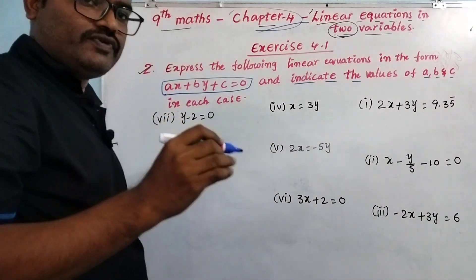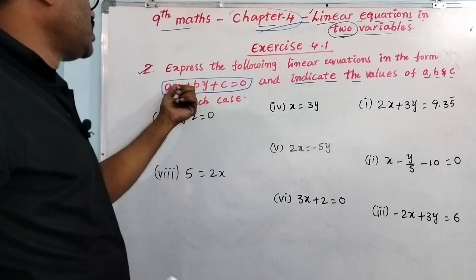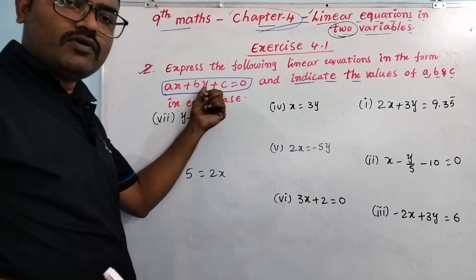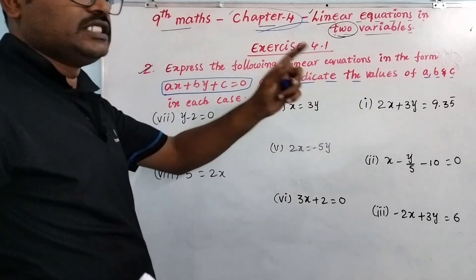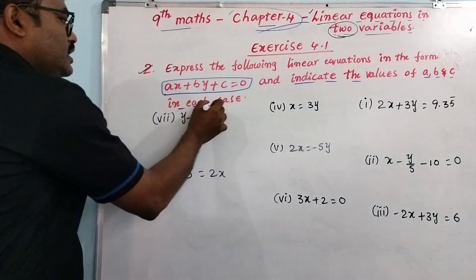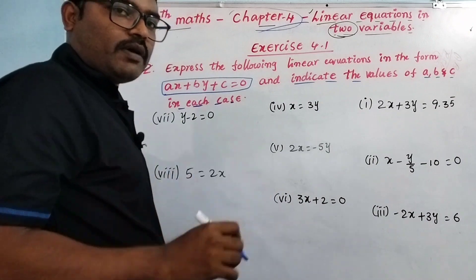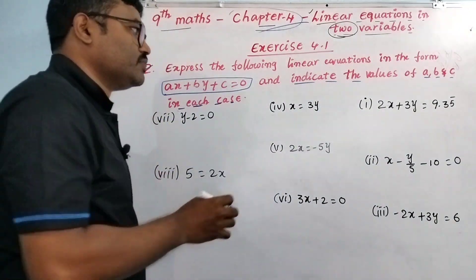A, B, C - these are the coefficients. A and B are the coefficients of x and y respectively, and C is the constant. In each case, in each problem, point out the A, B, C values.